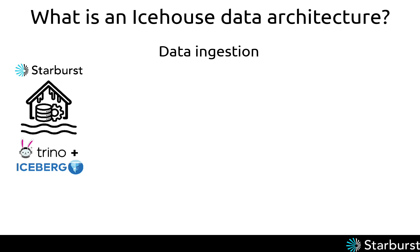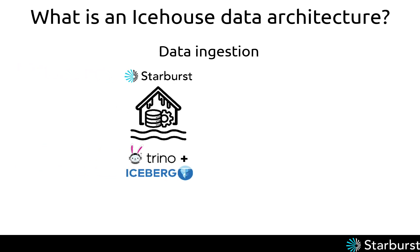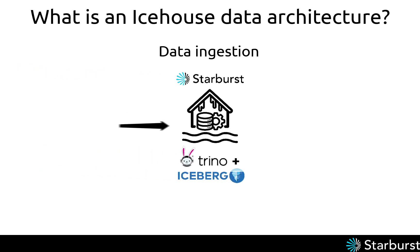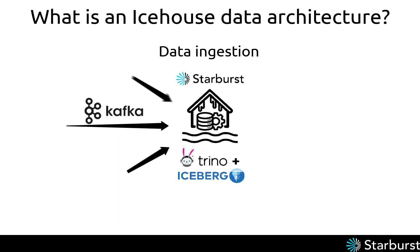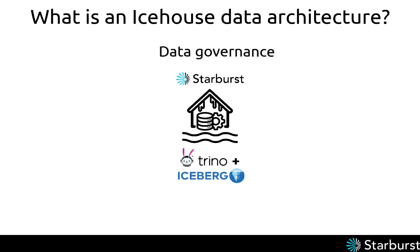The first ice house component is data ingestion. Starburst Galaxy controls how data lands in your ice house and includes near real-time streaming ingestion using Apache Kafka to ingest Iceberg tables at speed. Galaxy is also built around a heterogeneous approach to data, meaning you can ingest multiple sources at once, each feeding into the same ice house. Many organizations have multiple data sources, and with Starburst Galaxy you don't have to choose between them.